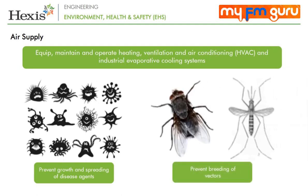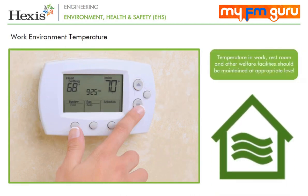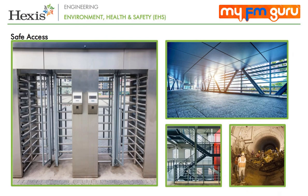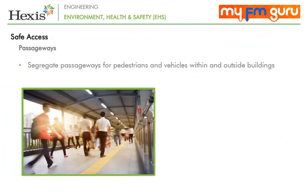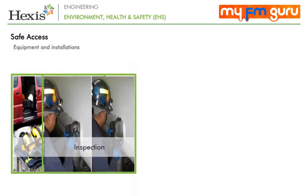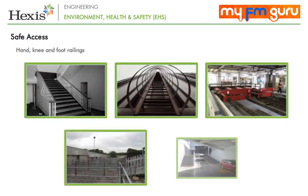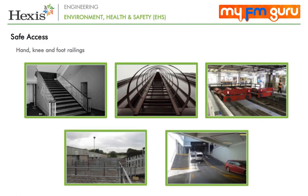The work environment temperature also plays an important role in facility design. During service hours, the temperature in work, restroom and other welfare facilities should be maintained at an appropriate level. Passageways for pedestrians and vehicles within and outside buildings should be segregated and provided for easy, safe and appropriate access. Equipment and installations required for servicing, inspection and cleaning should be unrestricted and readily accessible. Hand, knee and foot railings should be installed on stairs, fixed ladders, platforms, floor openings, loading bays and ramps to prevent people from falling.